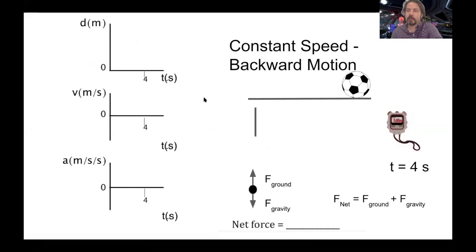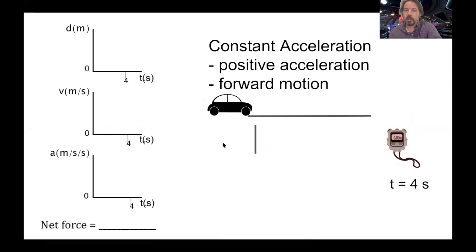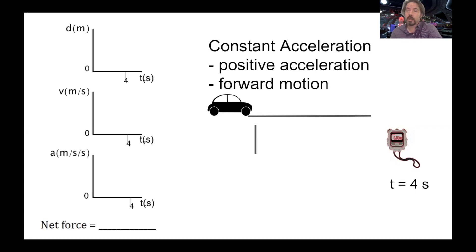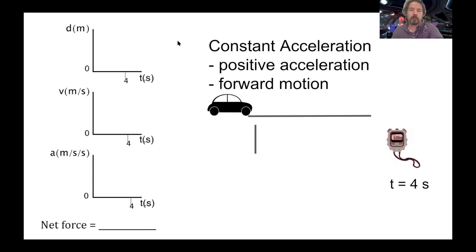Motion that accelerates. This time we're going to switch to a car so that we can constantly accelerate, because the soccer ball has a momentary acceleration — you kick it and then the force is done. So this time we're going to go with a car where there's a constant acceleration. We're going to accelerate forward, and acceleration means we're going to get faster and faster and faster, but we're also going to be moving forward. So if I were to draw my dot diagram, what is this going to look like?